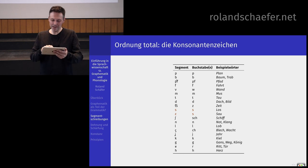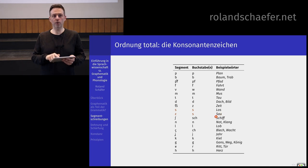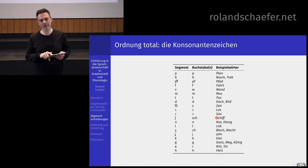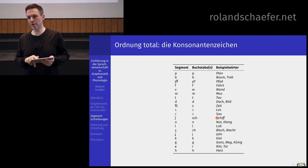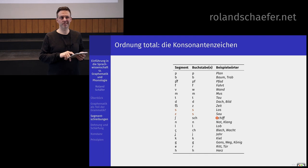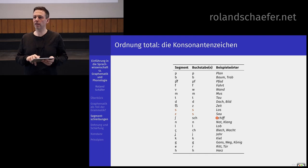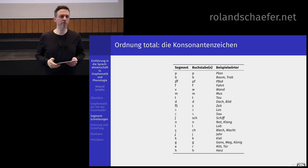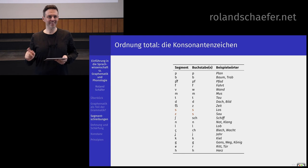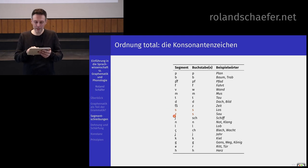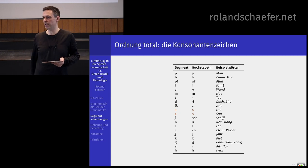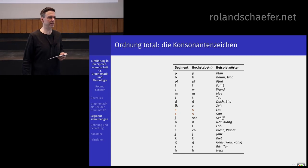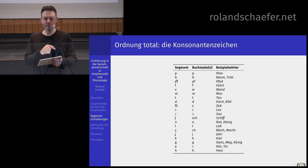Außer: wir haben ja nur einen Buchstaben S für die S-Laute in Los und Sau. Da gibt es ein zugrunde liegendes stimmhaftes S und ein stimmloses S, weil wir das nicht ganz mit Anfangsrand und Endrand wegerklären können, weil wir sowas haben wie Heißer und Heißer. Das heißt, wir brauchen ein zugrunde liegendes S in Heißer und ein zugrunde liegendes S in Heißer. Und das kriegen wir gleich noch weg – dann ist das wirklich Ordnung total bei den Konsonantenzeichen.